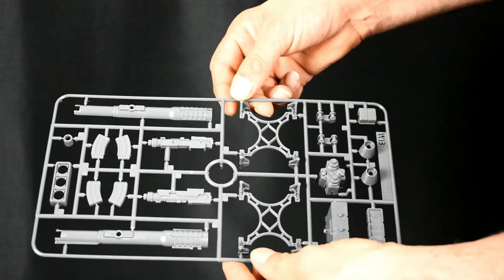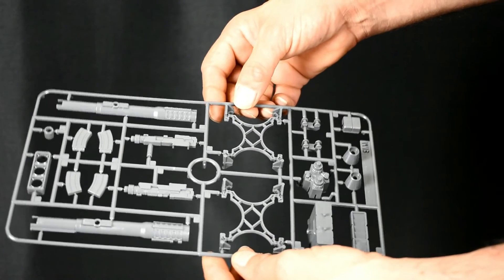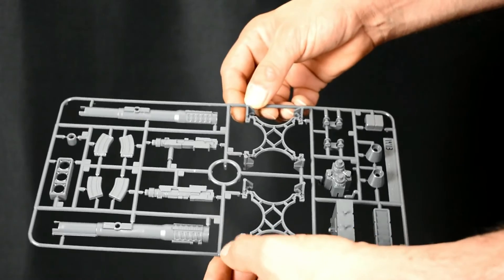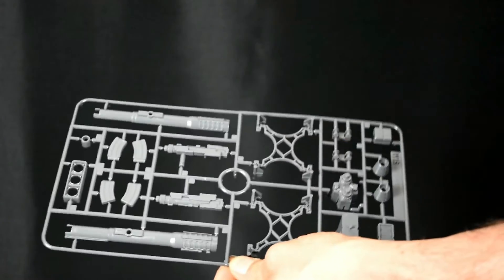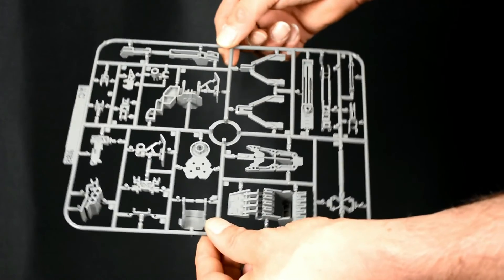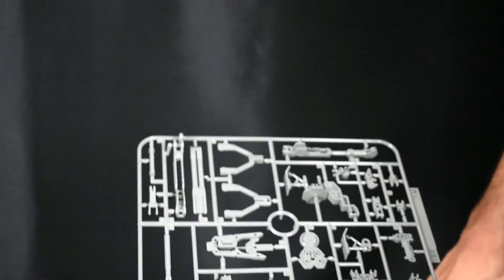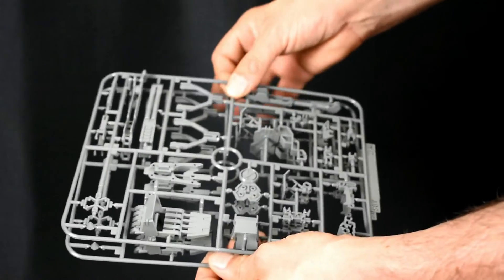Runner WB, the actual stands for the fuel tanks. Weapon options, weapons. You get two of those runners. Runner WC, more of the weapon runners. And you get two of those.